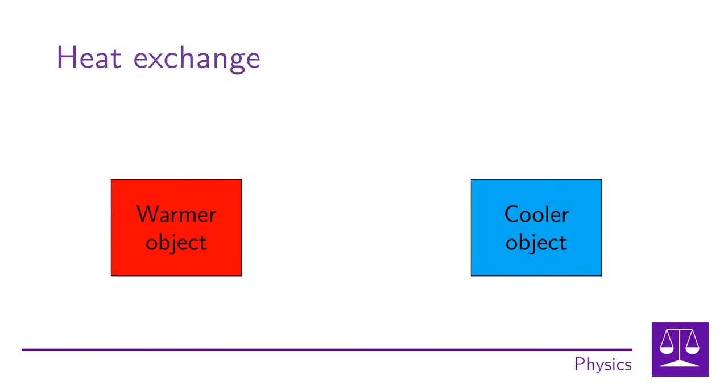In the picture we can see two objects, one warmer and one colder. Heat is then the energy that moves from a hotter object to a cooler one, which we have represented by an arrow from a hotter object to a colder one.